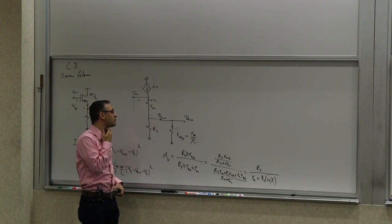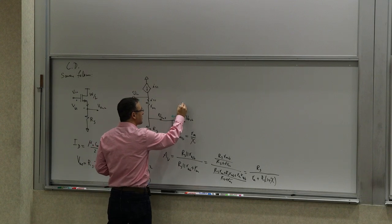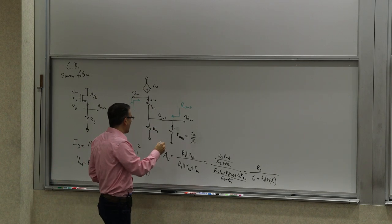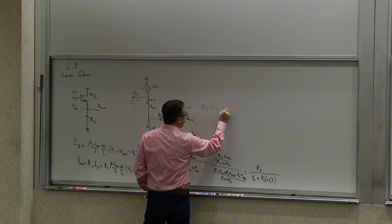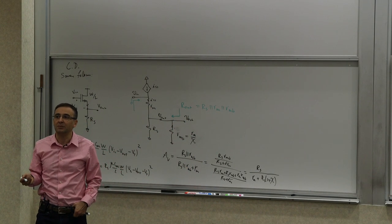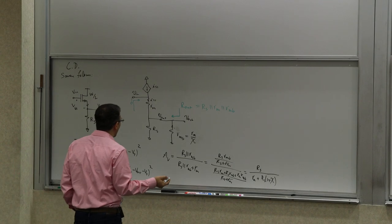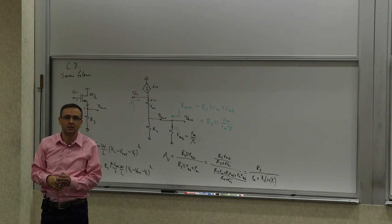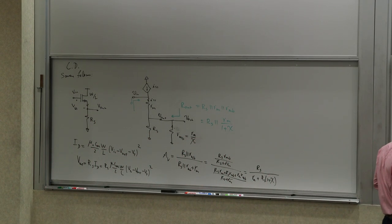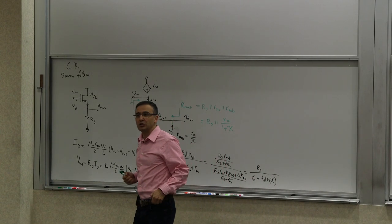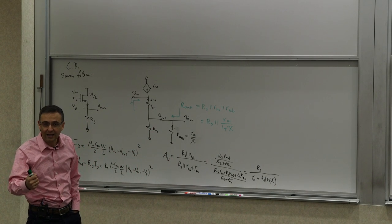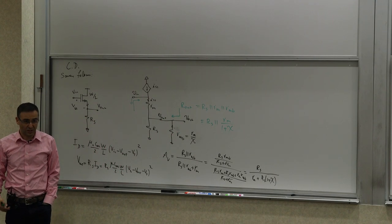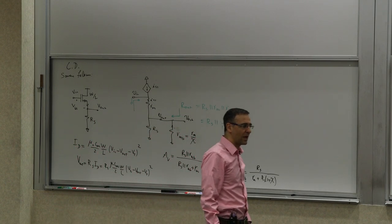From an outside perspective this stage still has an advantage: the output resistance is smaller because it is the parallel combination of R_S, R_M, and R_MB, which is smaller than R_M alone. You can also write it as R_S || (R_M / (1 + χ)), showing that the output resistance is quite low — smaller than R_M. So as a driver, when you need to drive a load that is not a very large resistance and you need a small source resistance, this stage can be quite useful.